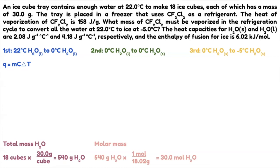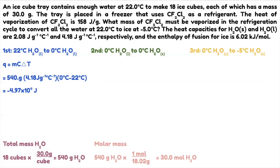For step one, Q equals 540 grams times 4.18 joules per gram degree Celsius times (0 minus 22 degrees Celsius). This gives negative 4.97 times 10 to the 4th joules. If you get decimals, scientific notation makes it easier.